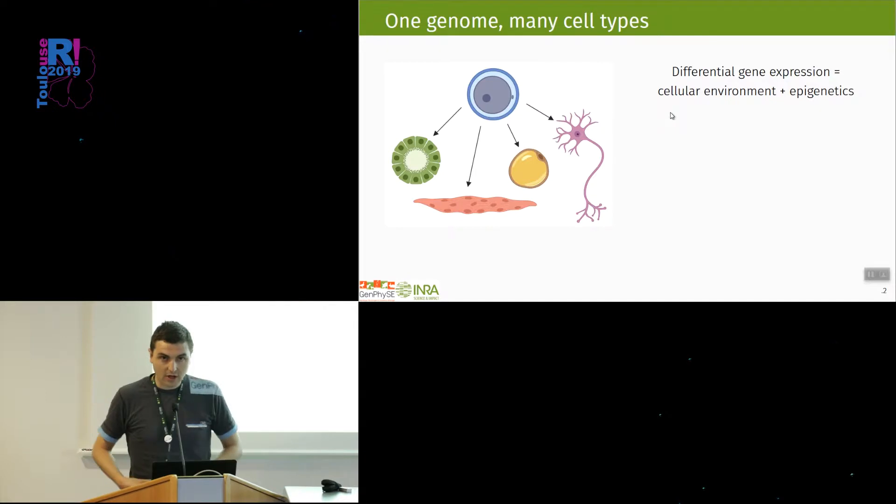Multicellular organisms like ourselves all come from a single cell, the egg cell, and during development this cell gives rise to many different cellular phenotypes such as epithelium, muscle cells, adipocytes, or neurons. All those cell types globally share the same genome but have very different phenotypes, and that's because they express their genes differently. This differential gene expression is mostly due to cellular environments that give different signals to the cells and how the cells respond to the signals through epigenetic regulation of gene expression.